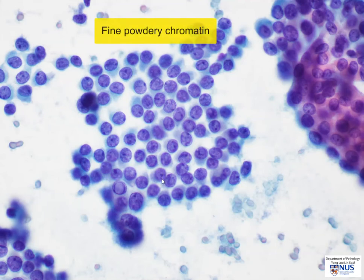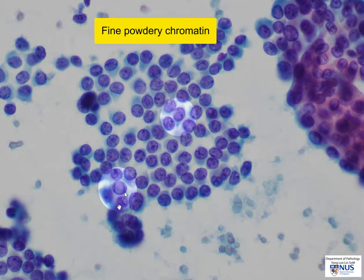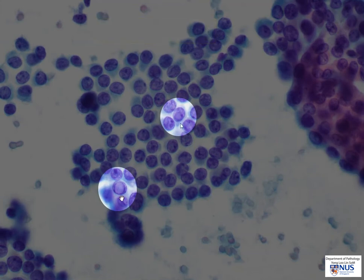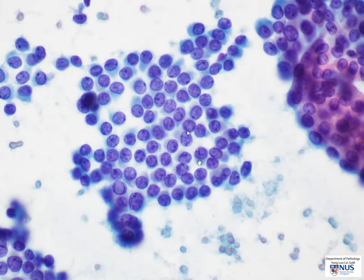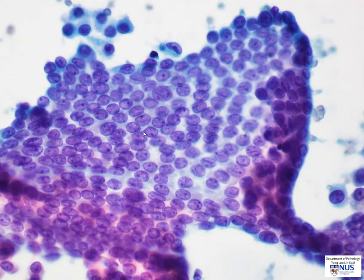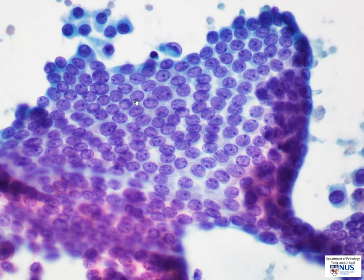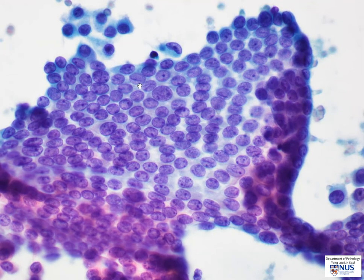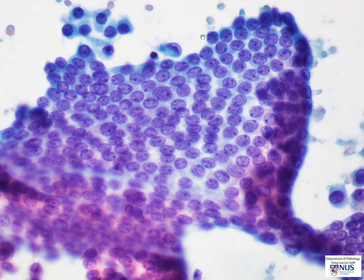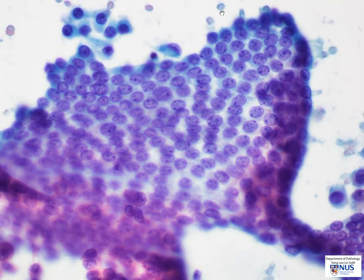The chromatin is very fine and powdery. Here we can see a very well-formed intranuclear inclusion — it helps to focus up and down to appreciate the inclusions. Here again is a high magnification view showing the overlapping of the nuclei. This feature is helpful in differentiating this from the honeycomb flat sheets that we see in colloid nodules. Note the nuclear grooves, the powdery fine chromatin, and compare the nuclear size to that of red blood cells.